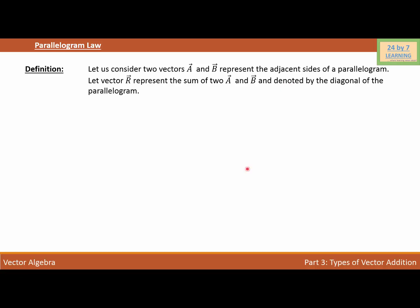In order to explain the parallelogram law of vector addition, I'm going to consider a vector A. This is my vector A and this is my vector B. I need to find the sum of these two vectors, and the sum is vector R, which is this vector.